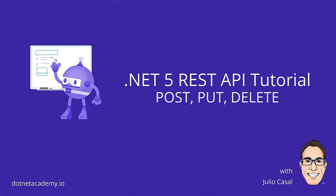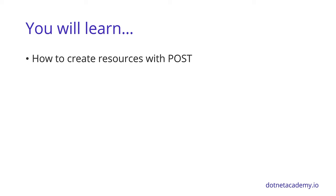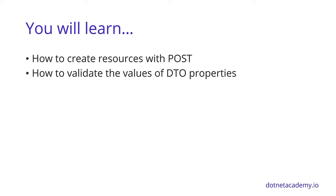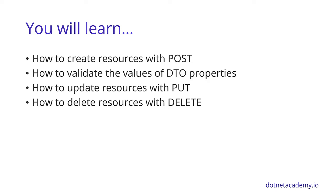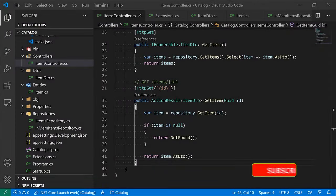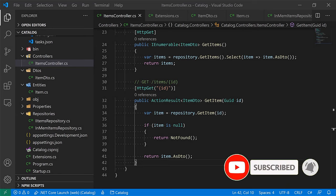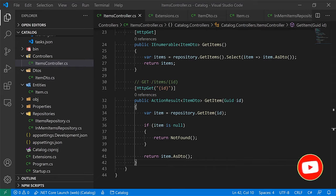In the fourth part of the .NET 5 REST API tutorial, we introduce additional controller actions for creating, updating, and deleting items. We'll also learn how to validate incoming DTOs to prevent invalid data from landing in the service. Today you will learn how to create resources with POST, how to validate DTO property values, how to update resources with PUT, and how to delete resources with DELETE.